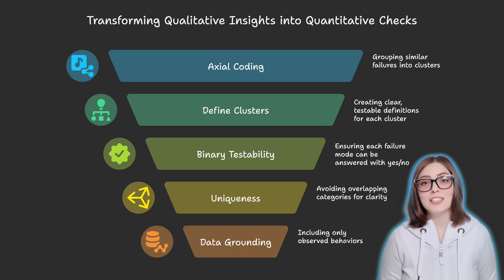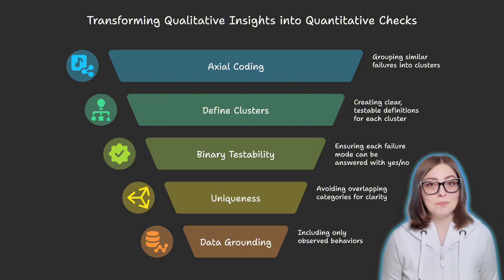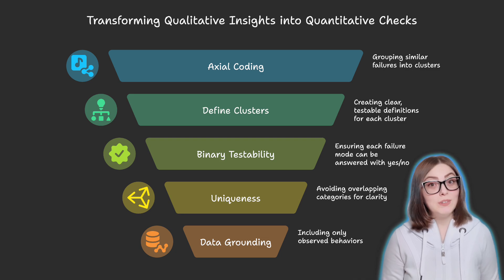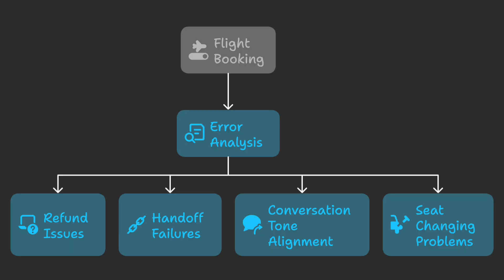Each failure mode should be binary and testable — evaluators should answer yes or no questions. Unique, to avoid overlapping categories and keep results interpretable. Grounded in data — only include behaviors that we actually observed. For example, in a flight booking scenario, error analysis might reveal these modes: refund issues, handoff failures, conversation tone alignment, and seat-changing problems. Each captures a recurring failure pattern.